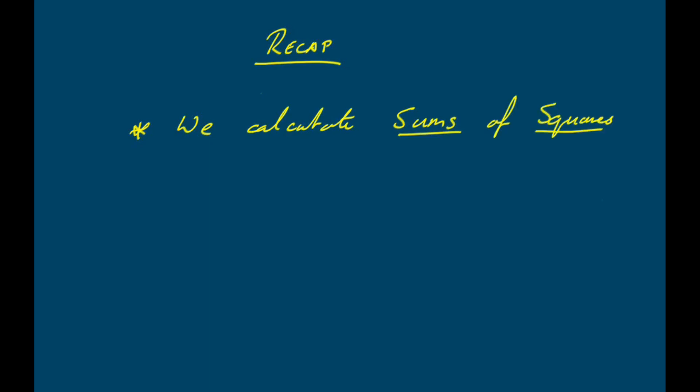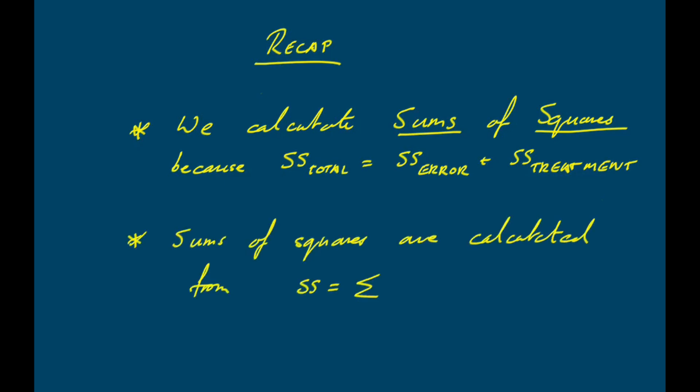When we partition these variances and do the calculations, we work with something called sums of squares. The reason we use sums of squares rather than calculating variance immediately is that the sums of squares are additive. So if we know the total sum of squares and the error sum of squares, we can find the treatment sum of squares by subtraction, and vice versa. Sums of squares are calculated by taking an overall mean or a group mean, subtracting it from each data point, squaring the result, and summing all those squared values.